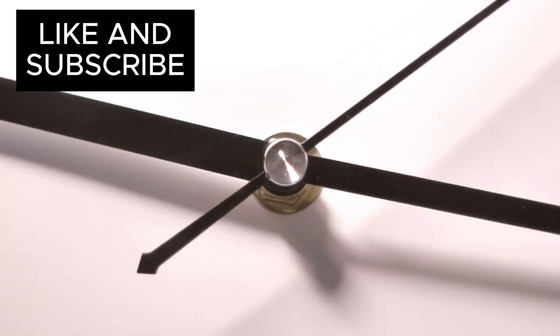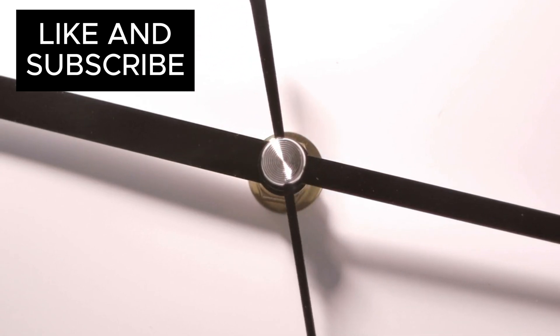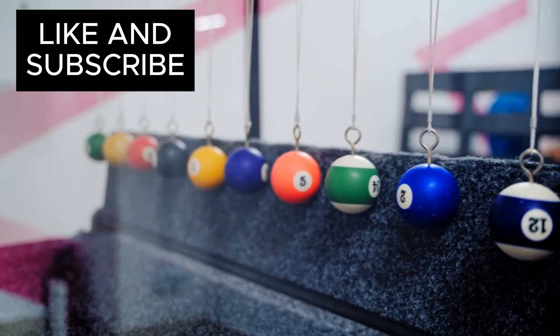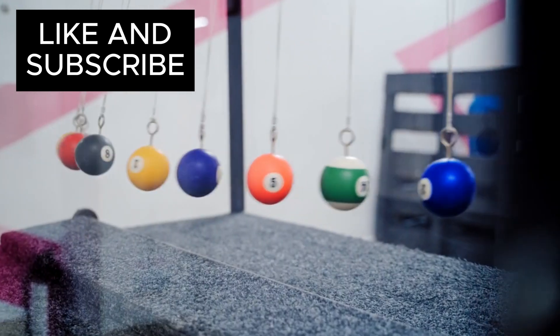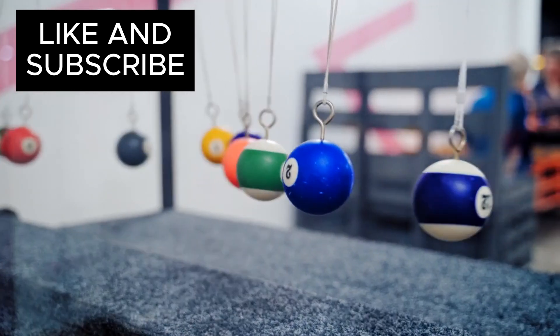Imagine a falling apple or the ticking of a clock, these are events that follow a predictable, linear course, where cause precedes effect. Newton's laws of motion gave us precise equations to predict what would happen next, making the universe seem like a giant clockwork machine.